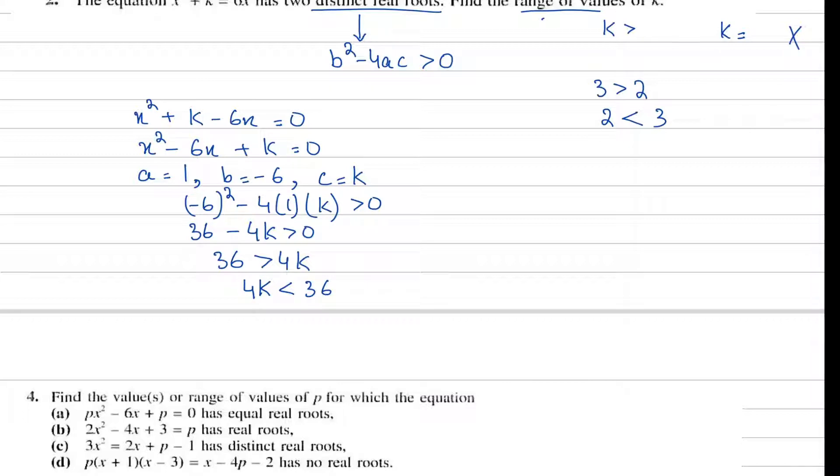Now we're going to rearrange this so 4k comes first: 4k is less than 36. We solve like a regular equation: k is less than 36 upon 4, so k is less than 9. As I said at the beginning, the answer is in range form, and k is less than 9 is our final answer.